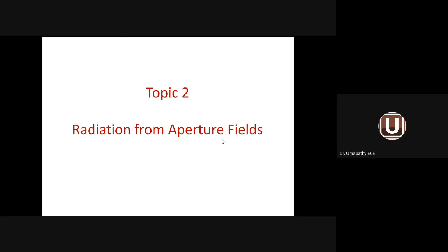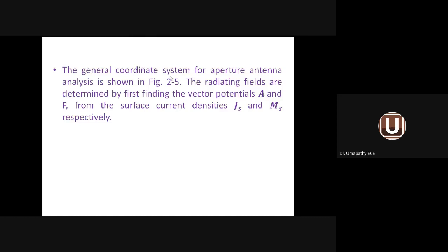Topic two is radiation from aperture field — that is, radiation from aperture antennas. The aperture antenna may be rectangular or circular, uniform or tapered in nature. We are going to determine the radiation by finding the expressions for E vector and H vector for the aperture antenna. The radiating fields are determined by finding the vector potentials A and F from the surface current density J and M respectively.